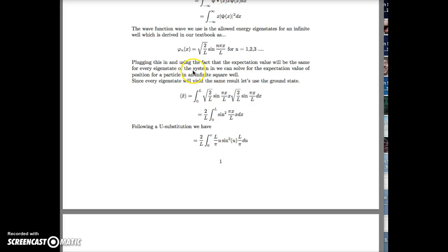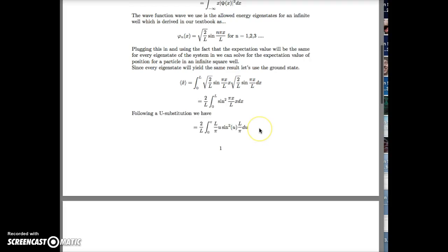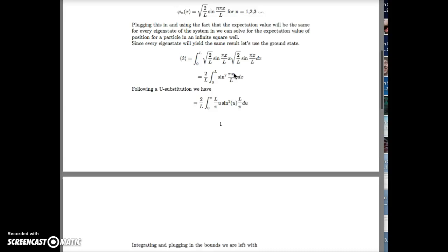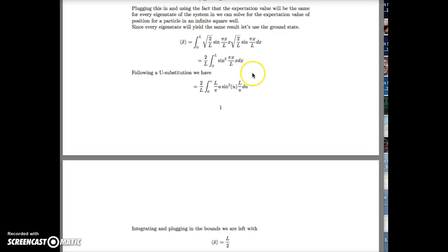we can solve for the expectation value of position for a particle in a square well. Since every eigenstate will yield the same result, let's use the ground state, where n equals 1. So plugging n equals 1 into this and plugging it into our equation for expectation value, we are left with this. We can combine terms and do a u-substitution, where u equals pi x over L. Integrating and plugging in our bounds, we are left with expectation value of position is L over 2.